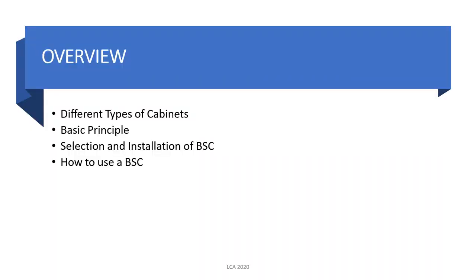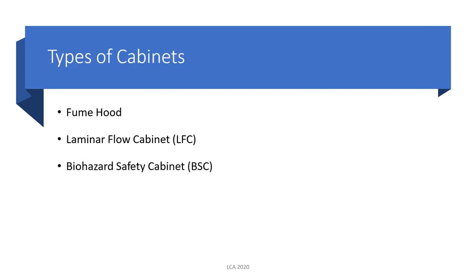Next we go to the different types of cabinets — the basic principles behind each biosafety cabinet, selection and installation, and how to use or manipulate them. We have three types of cabinets: the chemical fume hood, the laminar flow cabinet, and the Biological Safety Cabinet. These three types of cabinets are significant in processing or dealing with reagents and biological hazards inside the laboratory, and serve as added protection for laboratory personnel alongside PPE.